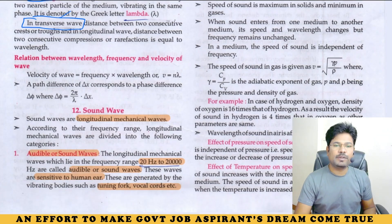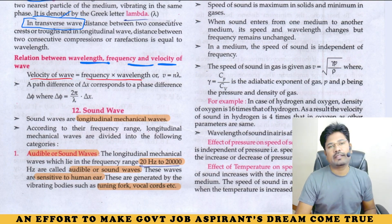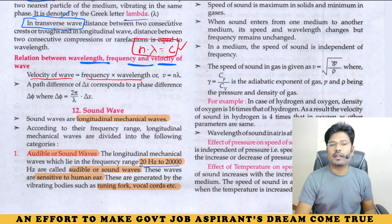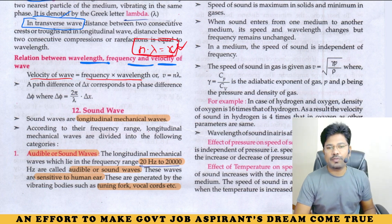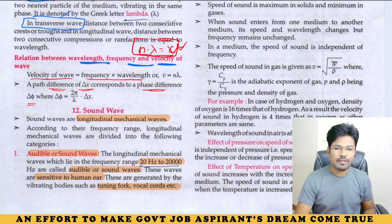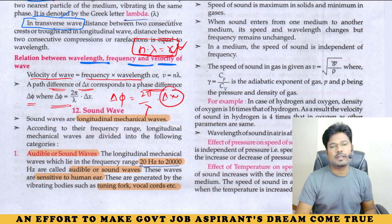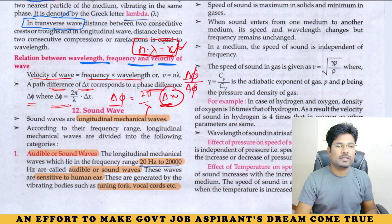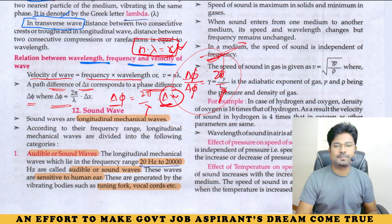The relation between wavelength, frequency, and velocity is: velocity equals frequency times wavelength, written as v = nλ, where n is frequency, λ is wavelength, and v is the velocity of the wave. When the path difference is Δx, it corresponds to a phase difference given by: phase difference = (2π / λ) × Δx. Therefore, phase difference divided by path difference equals 2π divided by λ.